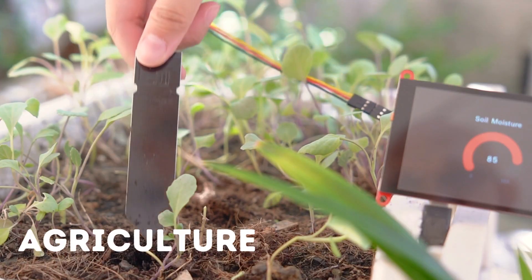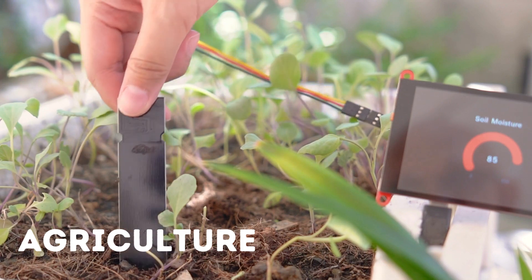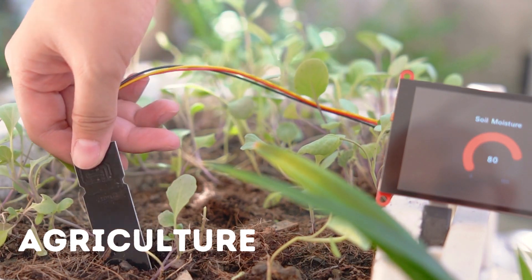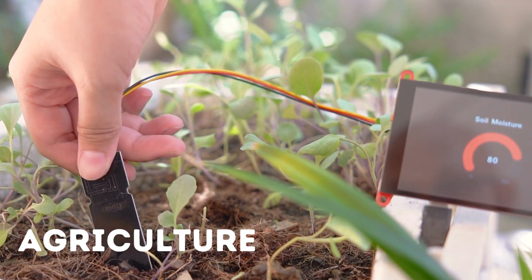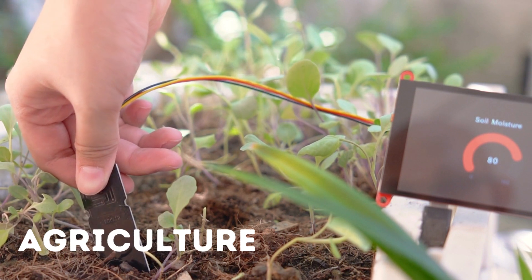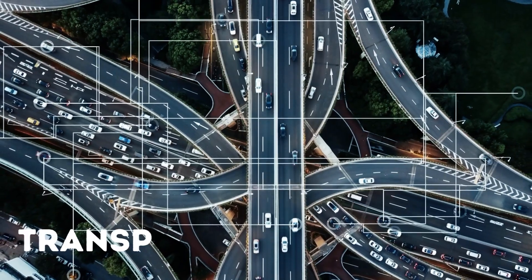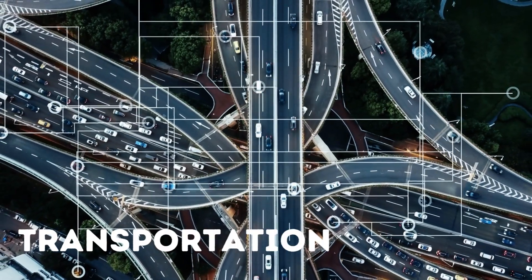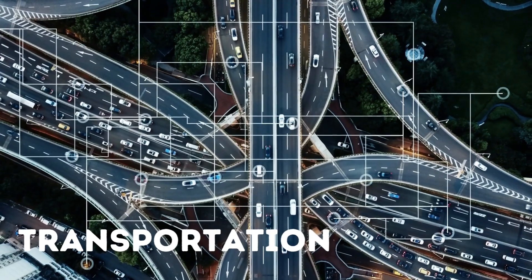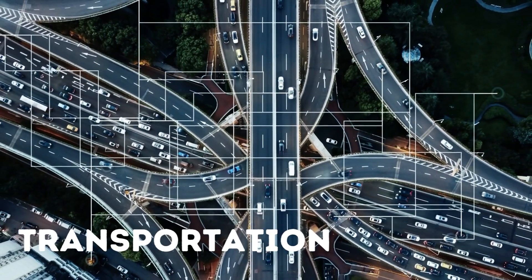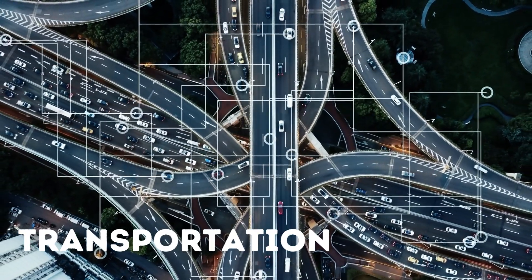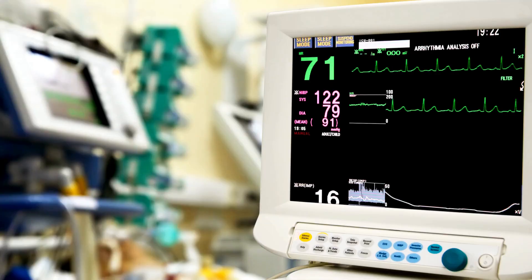In agriculture, IoT sensors can be used to monitor soil moisture, temperature, and other conditions, helping farmers to optimize crop yield. In transportation, IoT technology is used to improve traffic management, optimize routes, and reduce fuel consumption.